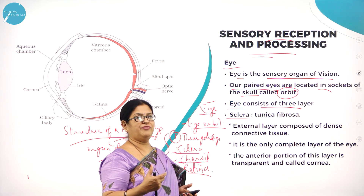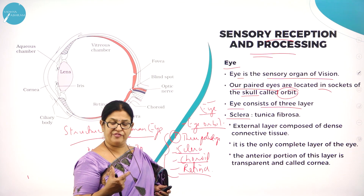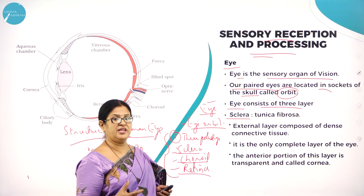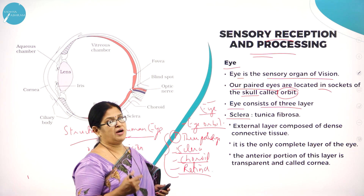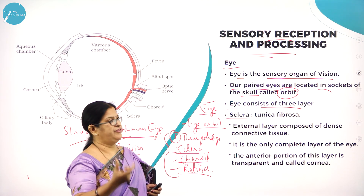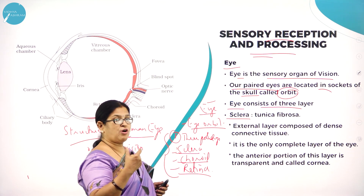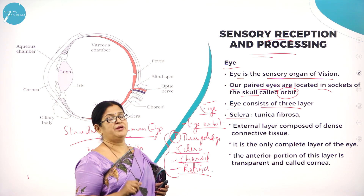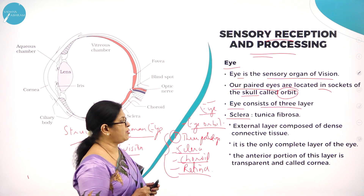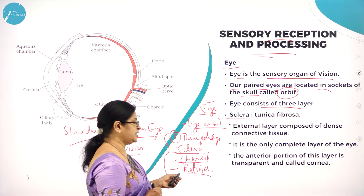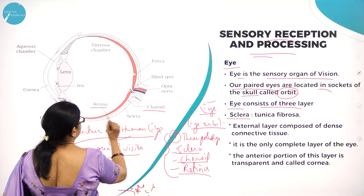Eye expresses our feelings, our emotions and thoughts, so it is not only an organ of vision but also an organ of expressing ourselves. Our paired eyes are located in the socket of the skull called the eye orbit. Eye consists of three layers: sclera, choroid, and retina. The white part of the eye is called the sclera — it is a continuous membrane. The third part is called the retina.